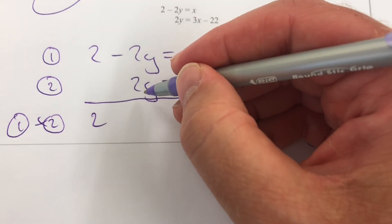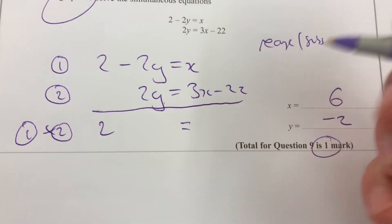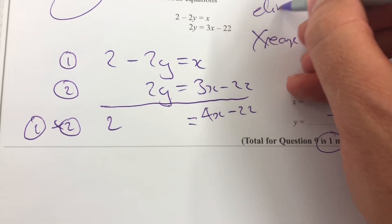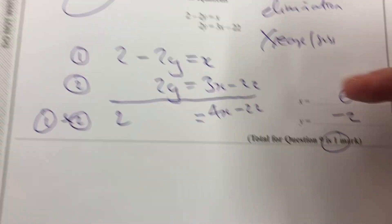If I just do 1 plus 2, I'm going to get 2. Minus 2y plus 2y is going to cancel, and then that's going to be 4x minus 22. So rather than rearranging and substitution, we're using elimination by adding.